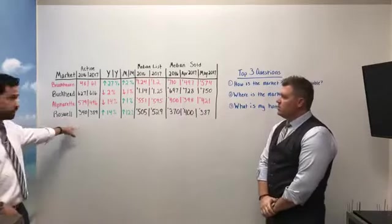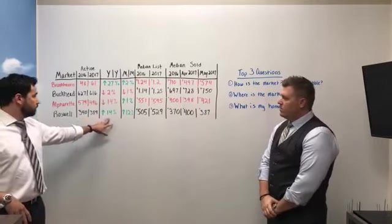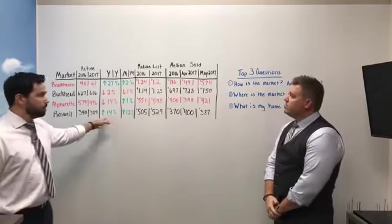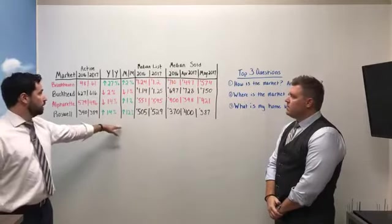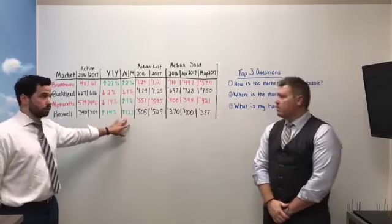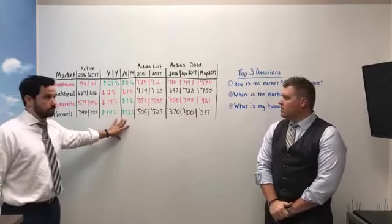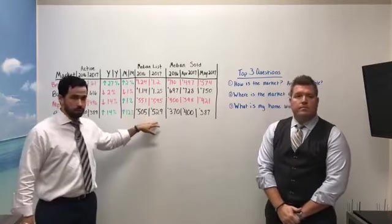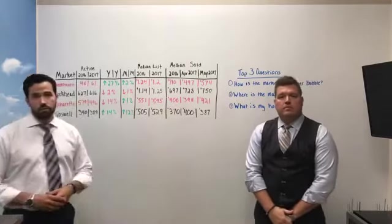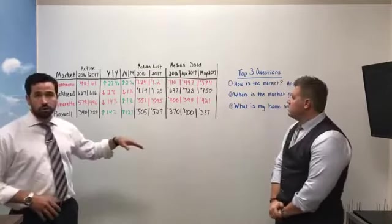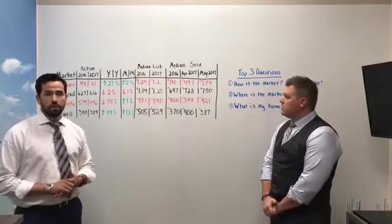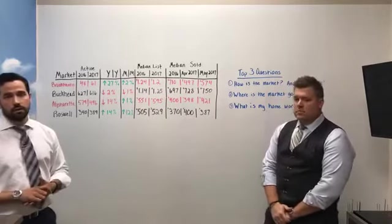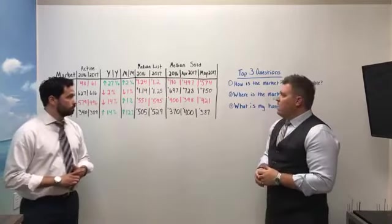Roswell is very similar. Year over year we have a 14% increase of homes available from May 2016 to May 2017. Month to month, that's a staggering 12% increase, so there's actually a lot more homes and things moving in this market. Median list price has an increase that reflects the increase in the sold price as well. So Roswell overall is a very increasing market. Many of you probably know it's on fire right now—it's a very hot market to be in, downtown Roswell, Canton Street.